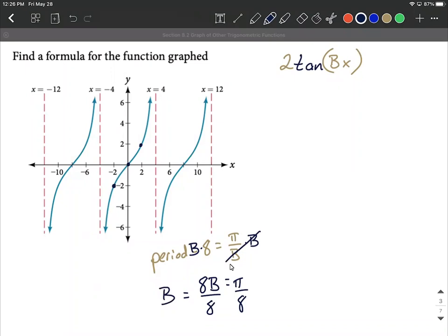As we include that, we have 2 times the tangent of pi over 8 times x. I think that's all we need on this graph, that it hasn't been picked up and moved to the right or left. So we don't have a phase shift going on, a number added or subtracted directly from x.